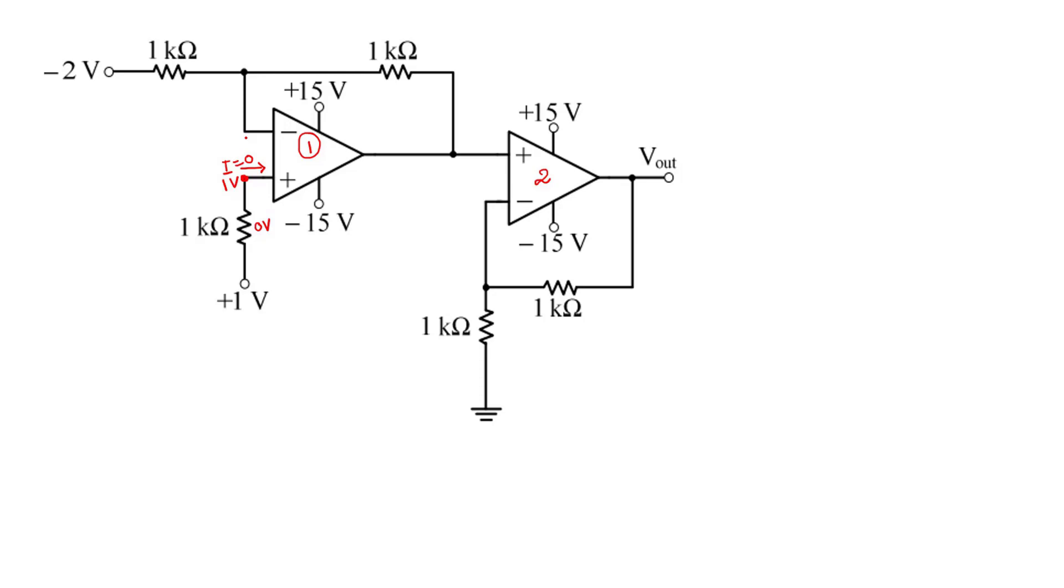There is a virtual short between this inverting terminal and non-inverting terminal, so here also 1 volt appears. Apply KCL at this node V1. I will assume this node voltage is V2. Apply KCL at node V1.